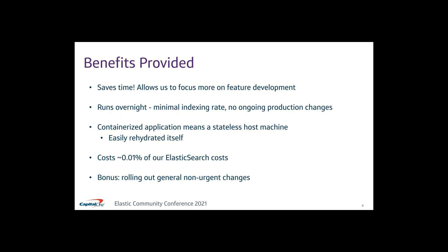But even with one or two failed rehydrations per week, we have seen significant benefits. The main benefit is our time saved — those two weeks of boring, tedious work can be replaced with more meaningful development. The rehydrations run at night when indexing rates are lowest and there are no ongoing production changes that could potentially conflict and cause issues. Containerization means next to no local dependencies on the Rehydratinator itself, keeping its upkeep and maintenance easy. And the cost of one additional R5 instance is nothing compared to what we already spend. Furthermore, we now have a painless method for rolling out other non-urgent changes — so for things like upgrading Java, that can be accomplished passively as part of this rolling rehydration process.